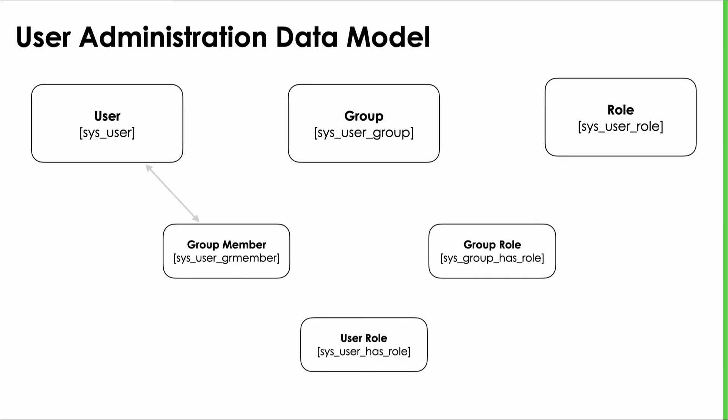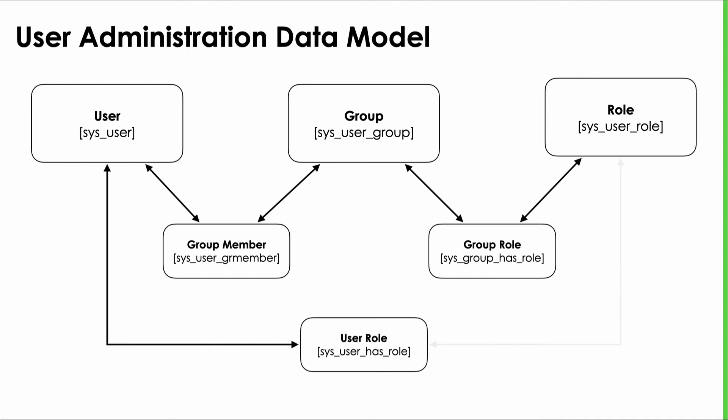Add to that a set of tables built to manage the relationships between these things, and you have all you need to tell the platform about each user and their persona. When you add a user to a group, you create an entry in the group member table — sys_user_grmember. When you add a role to a group, you create an entry in the group role table — sys_group_has_role. ServiceNow also allows you to directly add an individual user to a role, bypassing the use of a group, by creating a record in the user role table — sys_user_has_role. This isn't recommended as it's less flexible and more difficult to manage, but you can do it. The User Administration application provides tools for doing all of this.